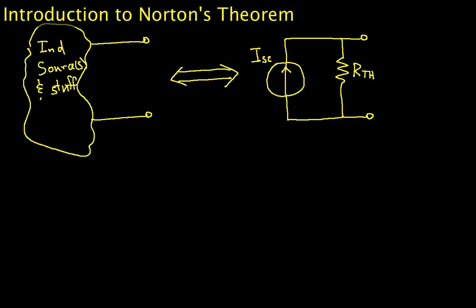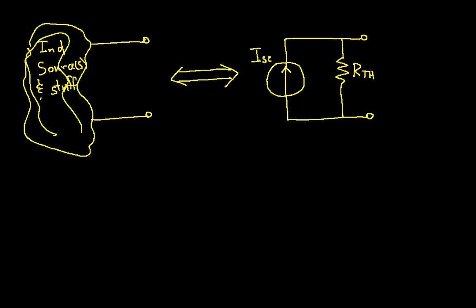in the sense that we have a circuit which consists of independent sources, one or more, and other stuff, where the other stuff would be resistors and dependent sources. And the idea is that this whole blob of stuff, all of this stuff in here, is equivalent to a single current source in parallel with the resistor.